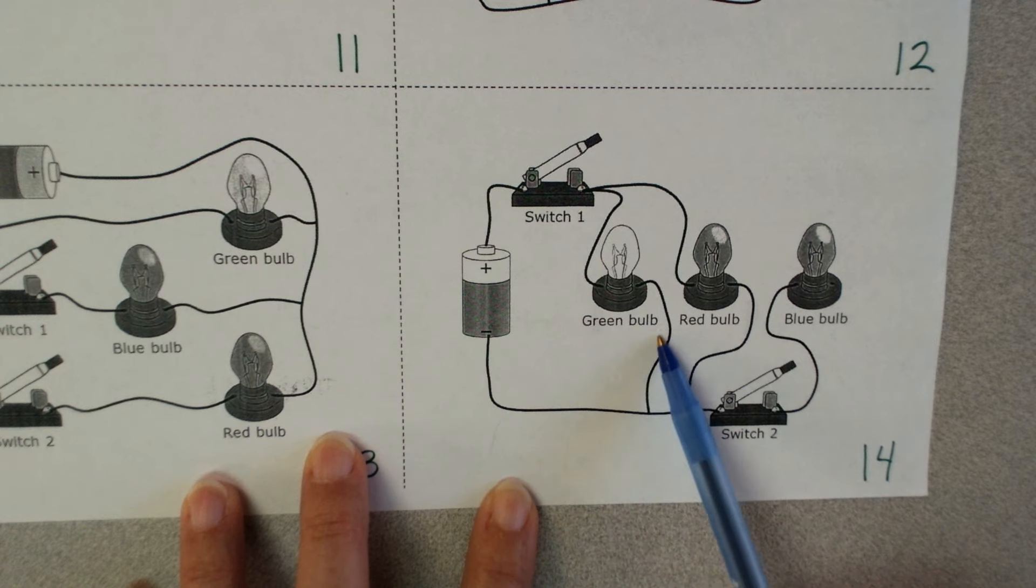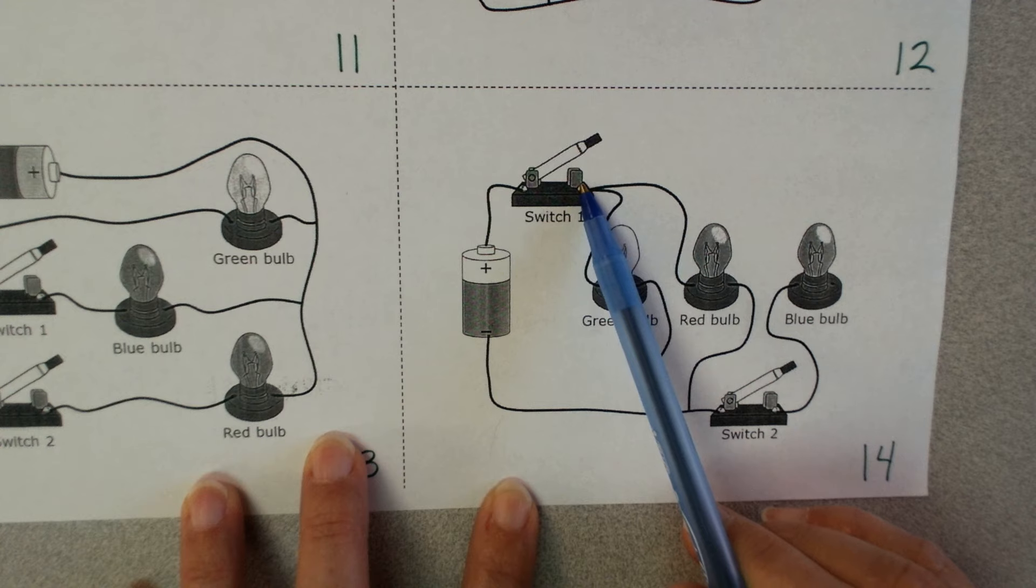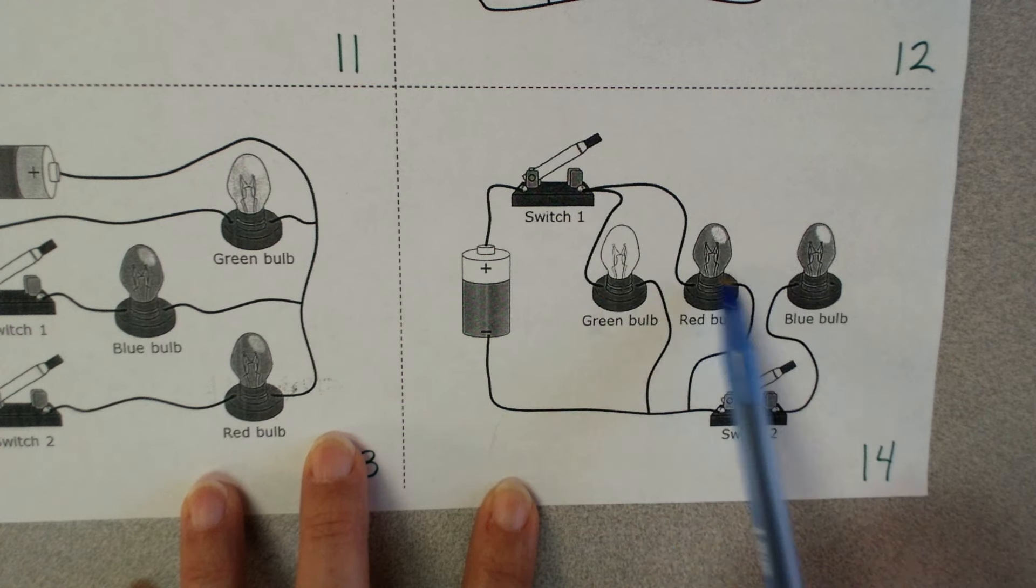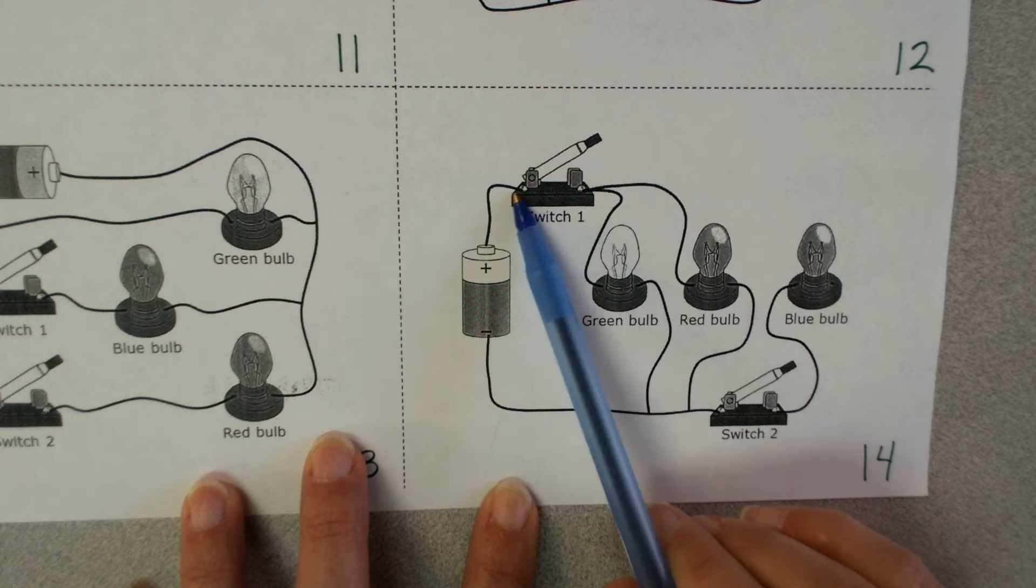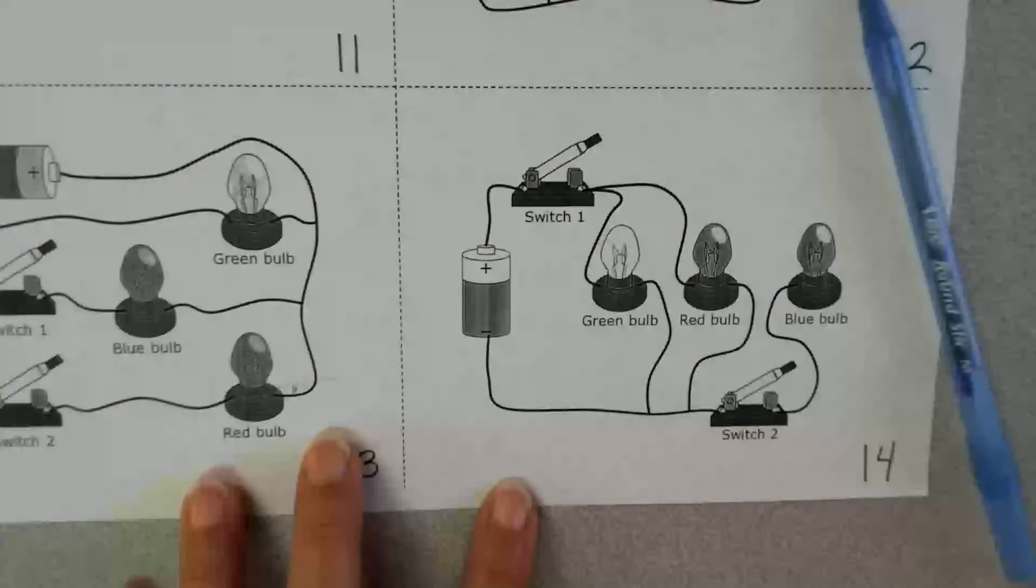So watch. Come out of the negative, I go through the green, but if it's open, I can't get past it. Remember, if I can't get back to this positive, it's not going to work. Same way with the red bulb. So if I were to close switch one, then both of these would be lit because both pathways are going to be complete.